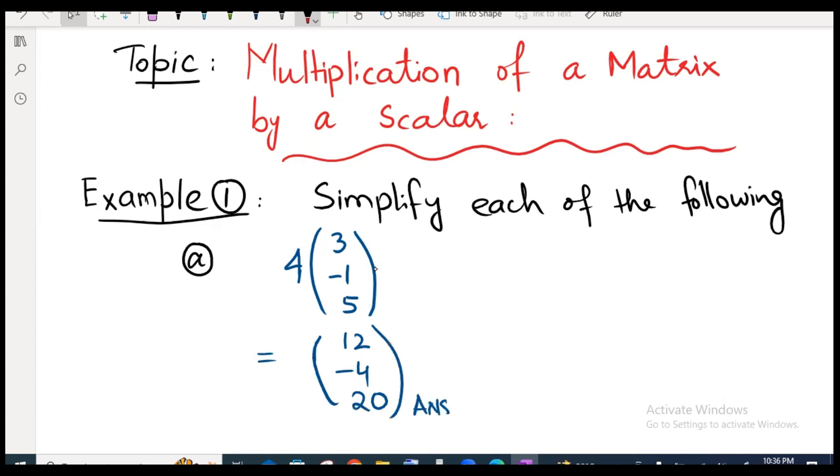This is the product of a scalar. This is scalar. Scalar and matrix. This is matrix. This is the product of scalar and matrix. Easy?